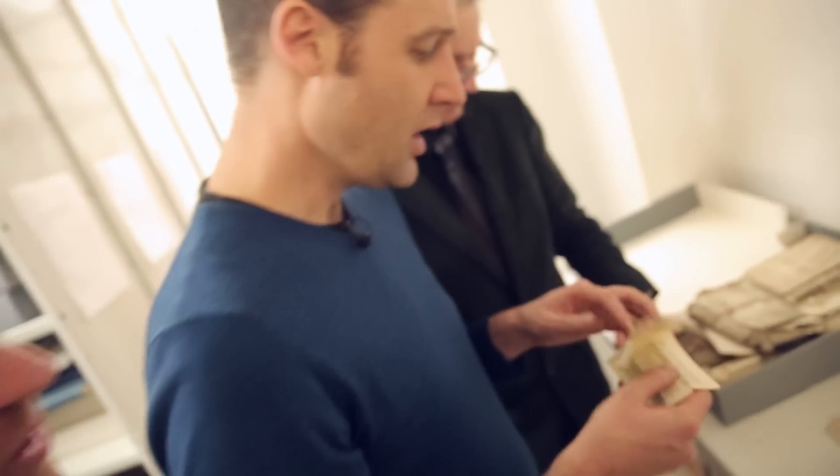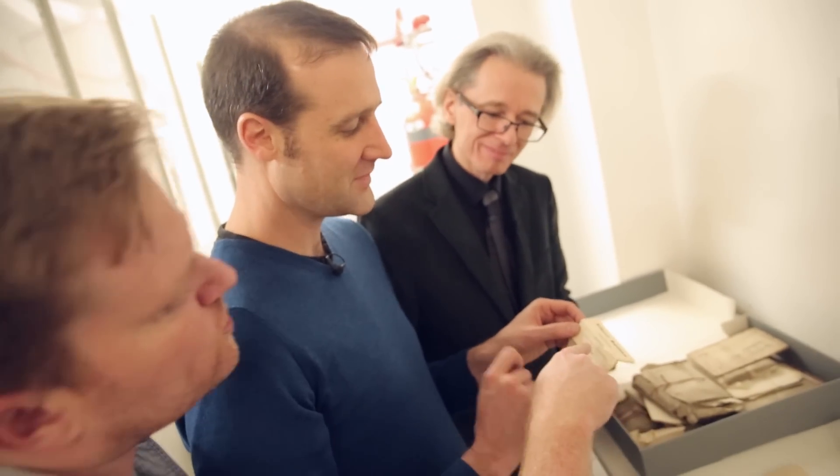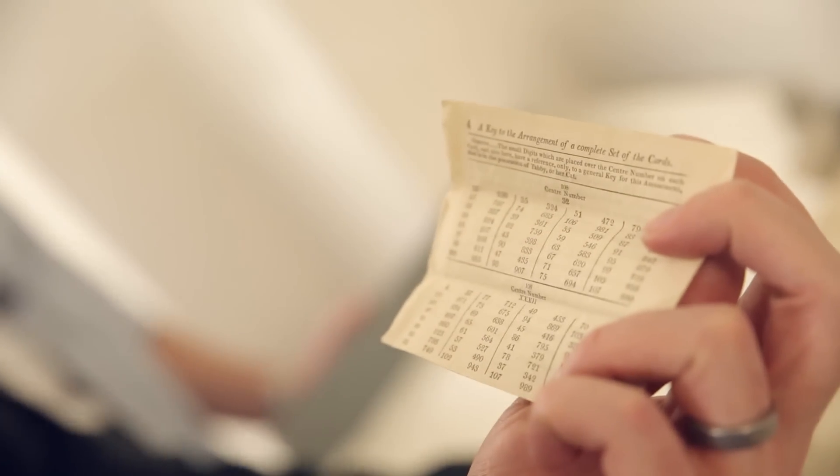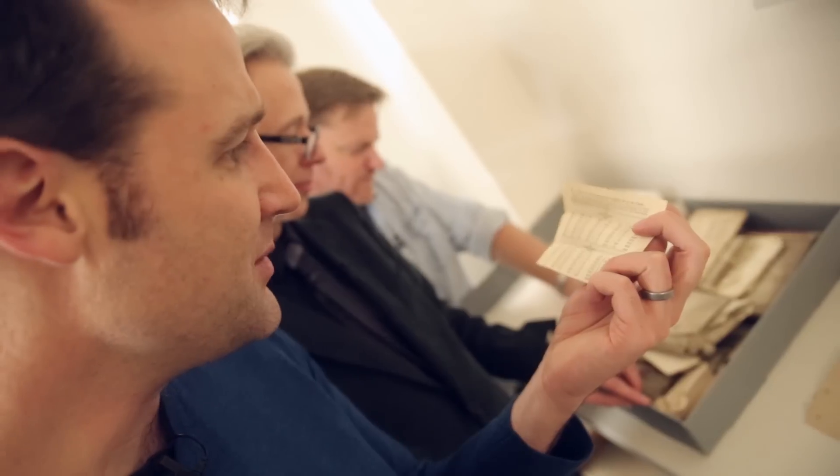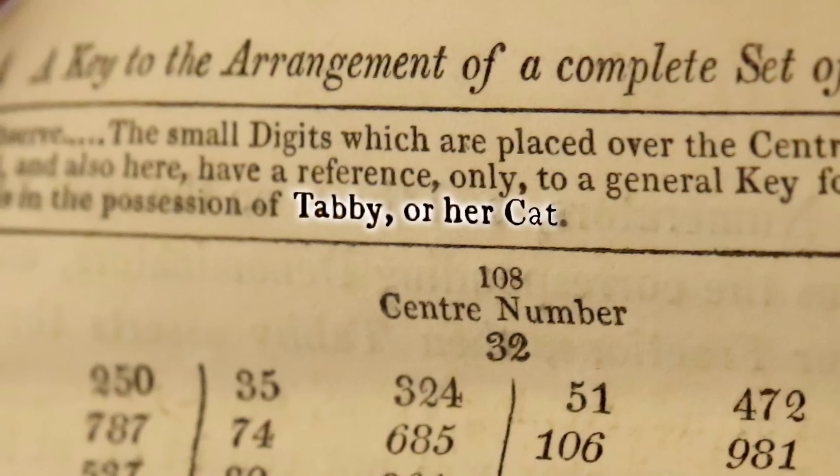What age group is this aimed at? Well, clearly from the front, children and amusement. No, hang on here. It says suitable only for Nobel Prize winners. The small digits which are placed over the center number on each card, and also here, only for this amusement, that is in the possession of Tabby or her cat. Wow. That hasn't helped at all.